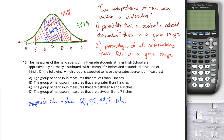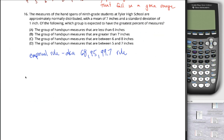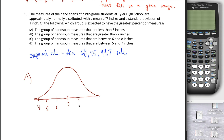Let's do it. For part A: what percentage of these 9th grade students have hand span measures less than 6 inches? I'll draw a new picture — here's my normal distribution with 7 in the middle, counting down by standard deviations on the left: 6, 5, 4, and counting up on the right: 8, 9, 10 — three standard deviations in both cases, pretty far out into the tail.